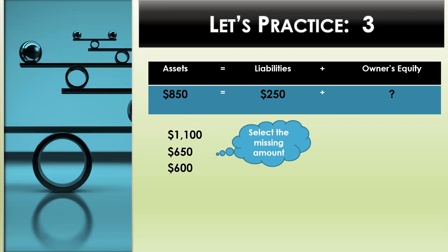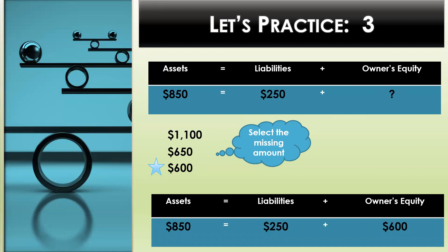Let's practice number three. In this problem, we are given assets equals $850, liabilities are $250, and we need to determine the missing amount for owner's equity. We can ask ourselves, what is $250 plus x equals $850. If you selected $600, you are correct. $600 is the missing amount that will keep this accounting equation in balance. Left side equals right side.